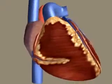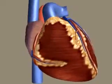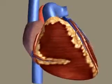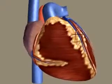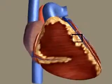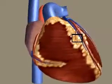Because the heart must continually beat, the coronary arteries serve a critical role, supplying the constantly active heart muscle with oxygenated blood.